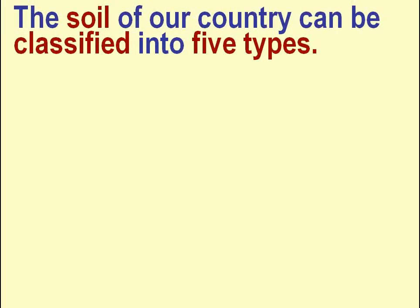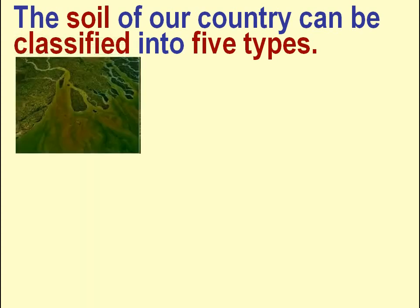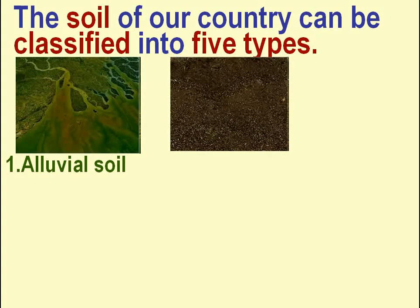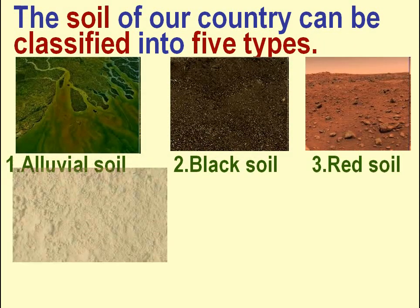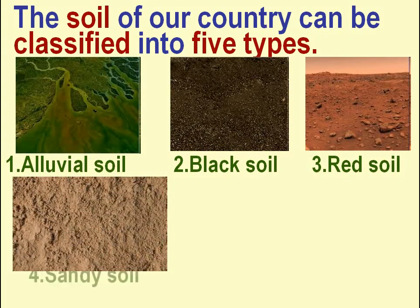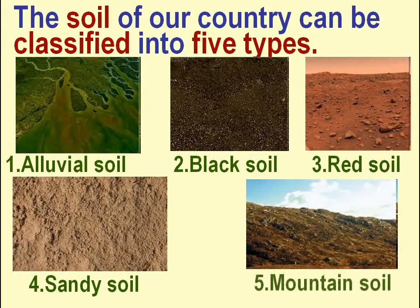The soil of our country can be classified into five types: alluvial soil, black soil, red soil, sandy soil, and mountain soil.